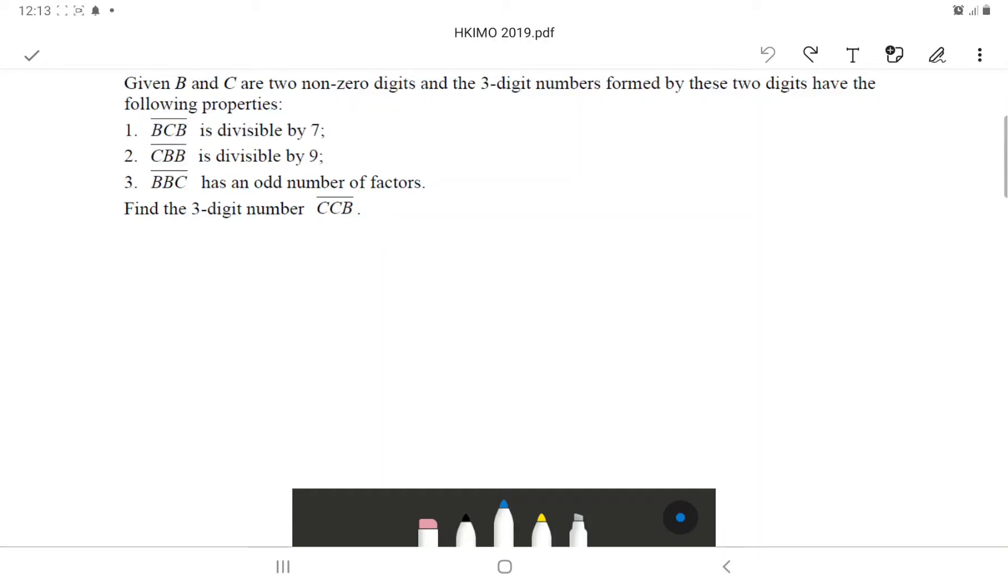Given B and C are two non-zero digits, and the three-digit numbers formed by these two digits have the following properties: First, BCB is divisible by 7. Second, CBB is divisible by 9. Third, BBC has an odd number of factors. Find the three-digit number CCB.